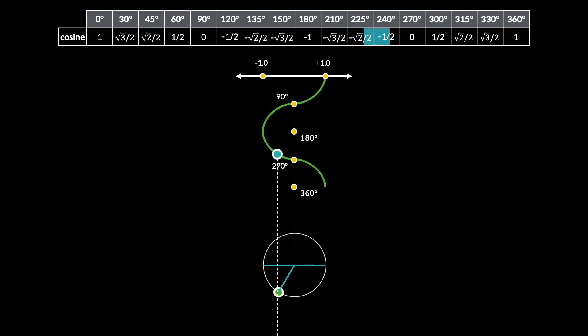minus 1 at 180, again 0 at 270 and 1 when you're back at the same point.